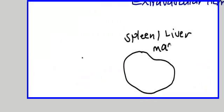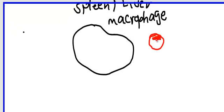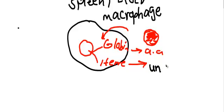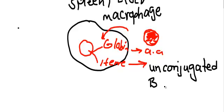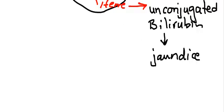In extravascular hemolysis, abnormal red blood cells are phagocytized by macrophages. The macrophages release two things: first, globin, which goes as amino acids; and second, heme. Heme, through a pathway involving protoporphyrin, leads to the release of unconjugated bilirubin. This unconjugated bilirubin is albumin-bound and lipid-soluble, and it is responsible for jaundice in extravascular hemolysis.